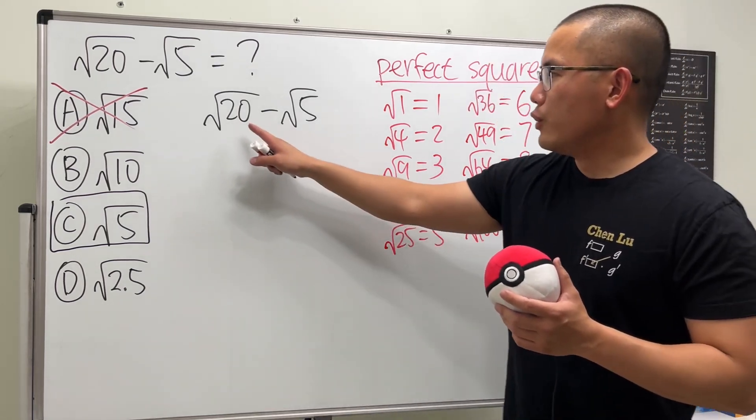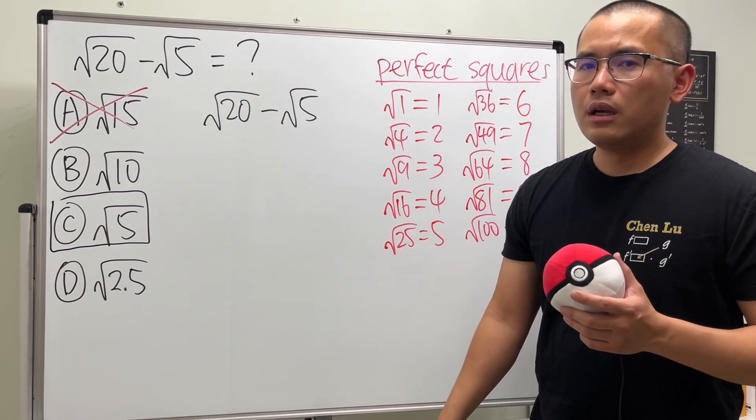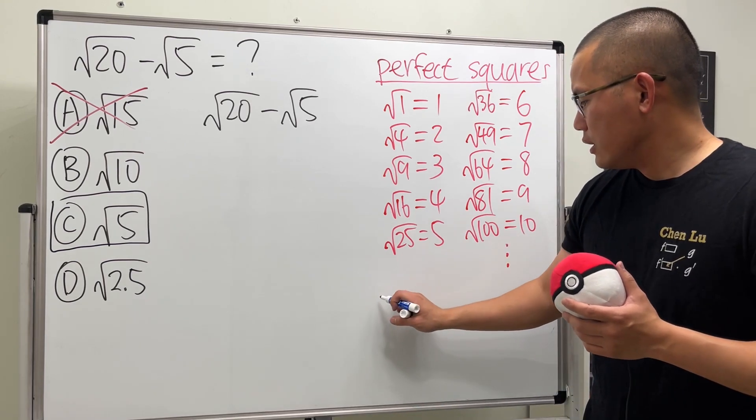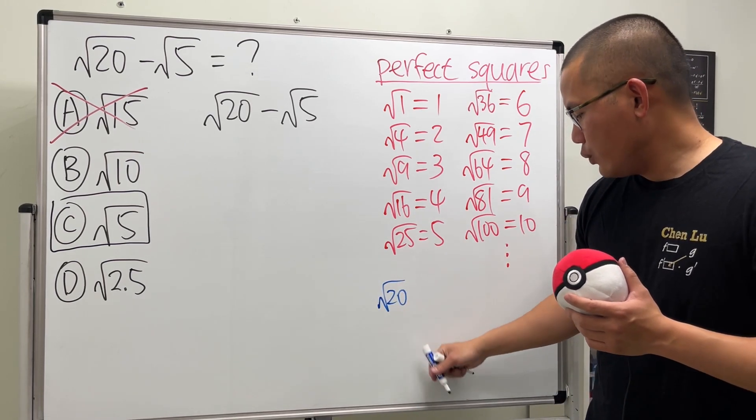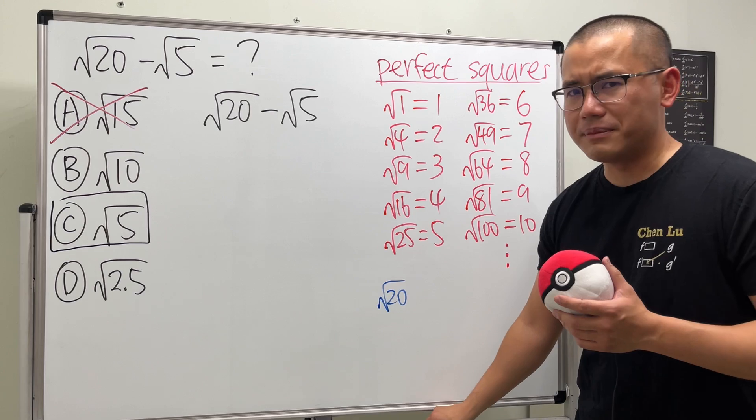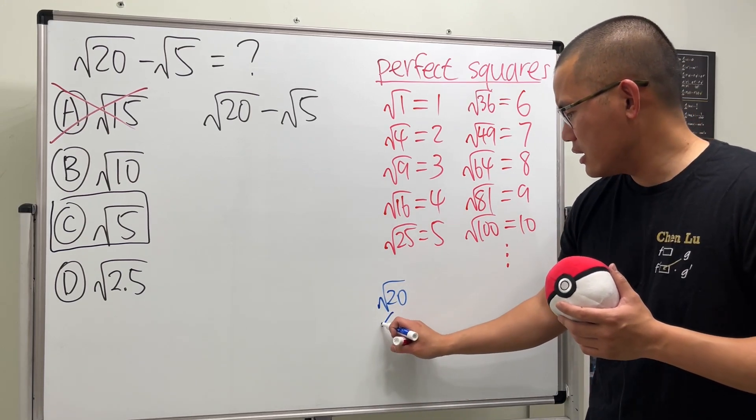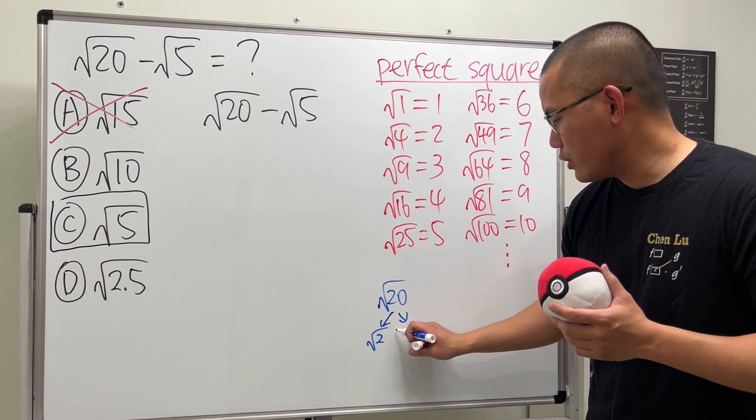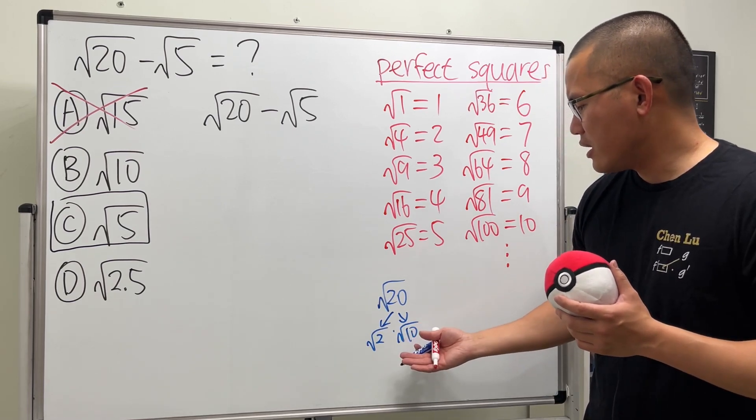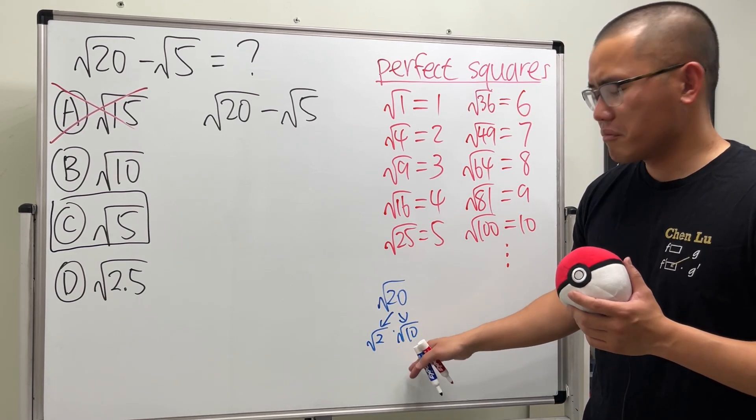So now, right here, we see square root of 20. We know square root of 20, we can break it down as 2 times 10 is square root of 20. Yeah? Square root of 2 times square root of 10. This right here, 2 times 10 is 20. That's good.